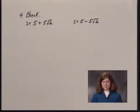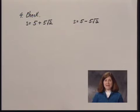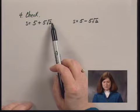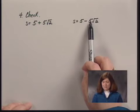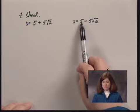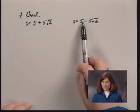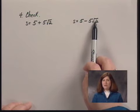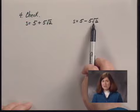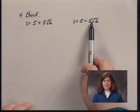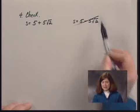So we actually have two answers to check: 5 plus 5 times the square root of 2, and 5 minus 5 times the square root of 2. Since we're dealing with sides of a square, let's check if either is negative. The first is positive. For the second, 5 times the square root of 2 is 5 times something greater than 1, so it's greater than 5, making the difference negative. That is not a possible solution.